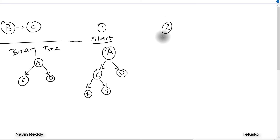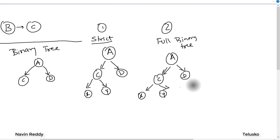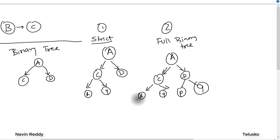The second type is a full binary tree, where every node has two sub-nodes and all leaf nodes are on the same level. For example, A has C and D; C has X and Y; D has P and Q. All leaf nodes X, Y, P, Q are on the same level — that's a full binary tree.